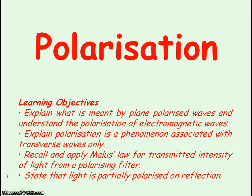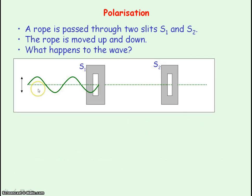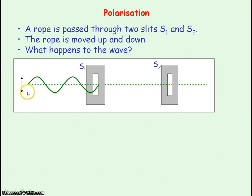We're going to be looking at polarisation. Let's first consider a rope that is passed through two slits, S1 and S2. The rope is moved up and down to form a transverse wave. A transverse wave is where the oscillations are perpendicular to the direction in which the wave energy is travelling.